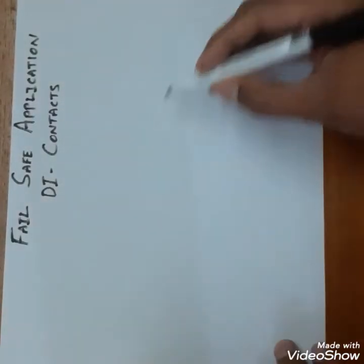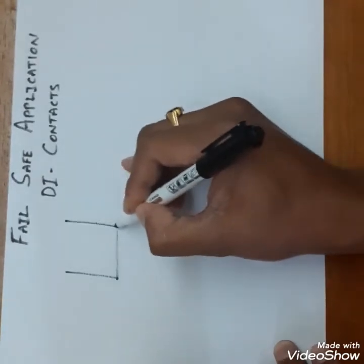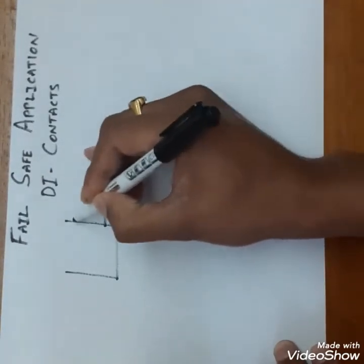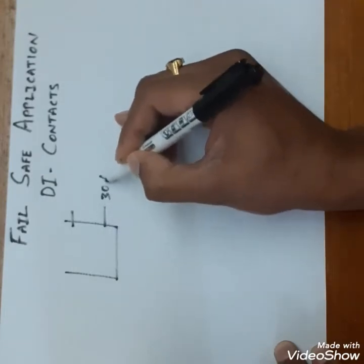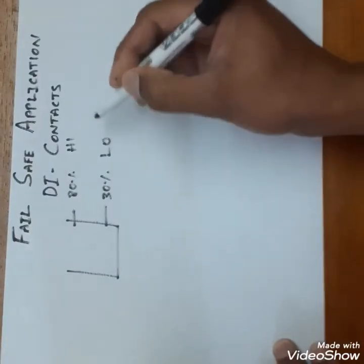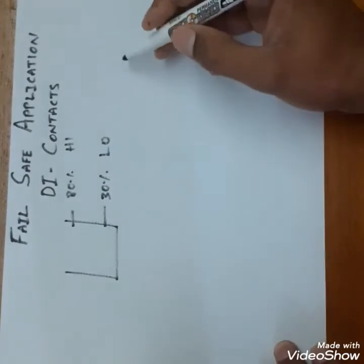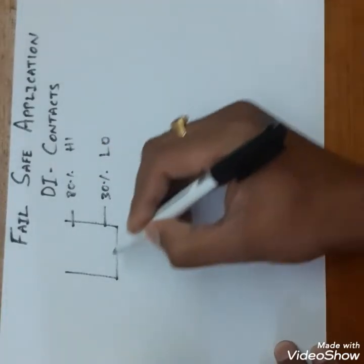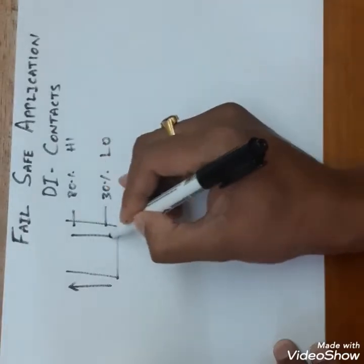I'm giving an example with level switches. We have two level switches, one is high and another one is low. The high one is rising and the low one is falling.